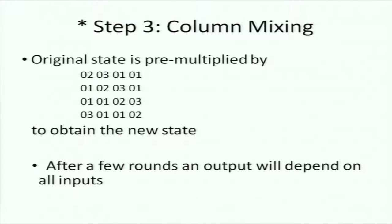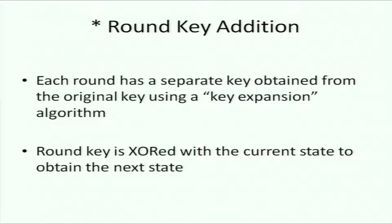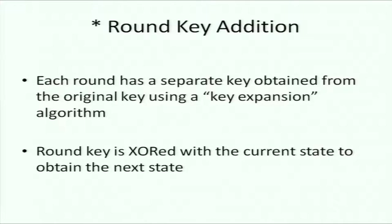The interesting thing is the avalanche effect: after a few rounds, an output will depend on all the inputs. The final step is round key addition — you take the 4×4 state matrix and exclusive OR each element with a 4×4 round key matrix, also 128 bits. So each round has four steps, and there are 10 rounds.